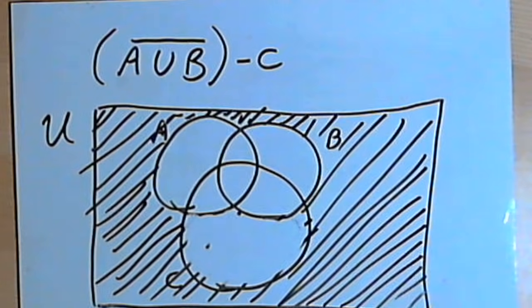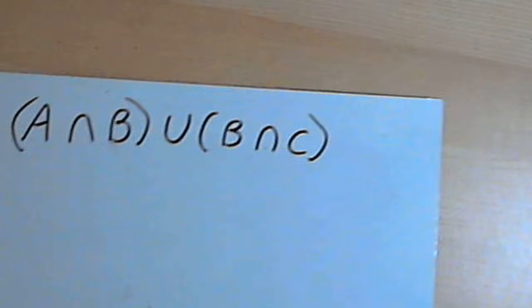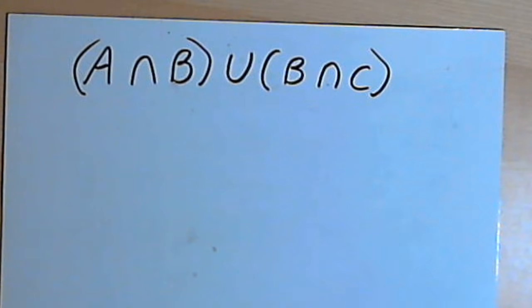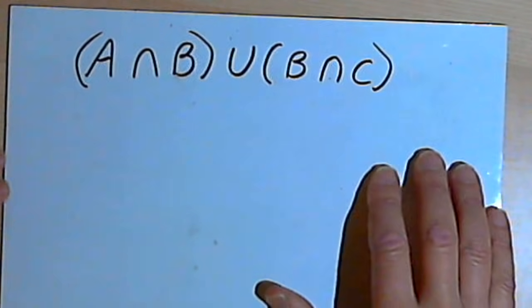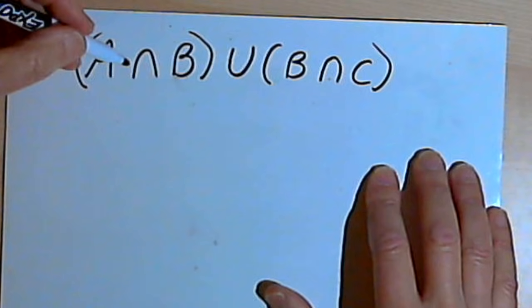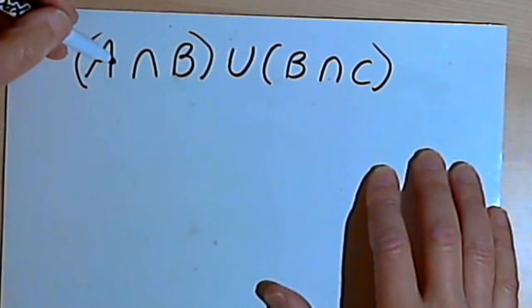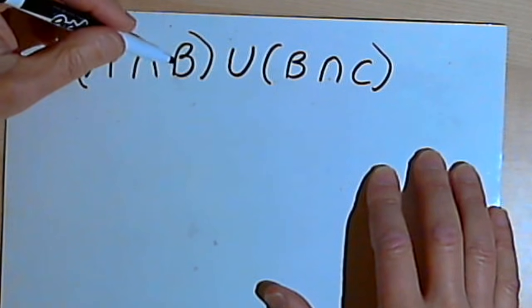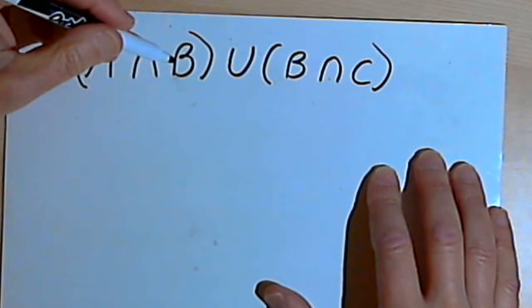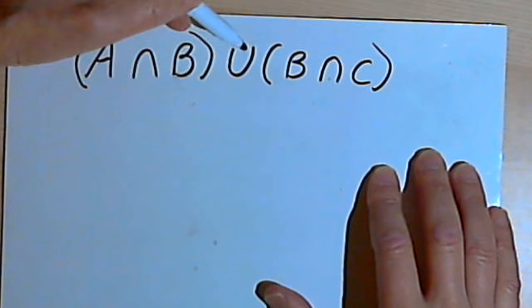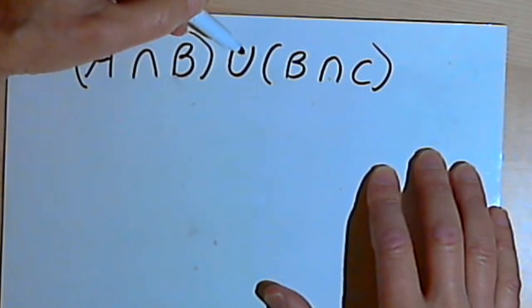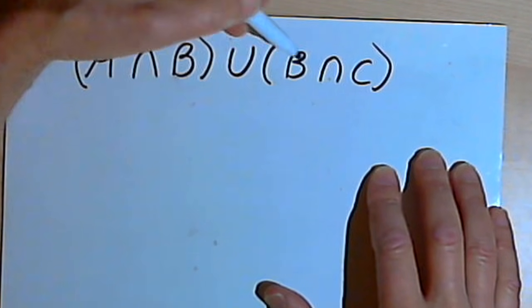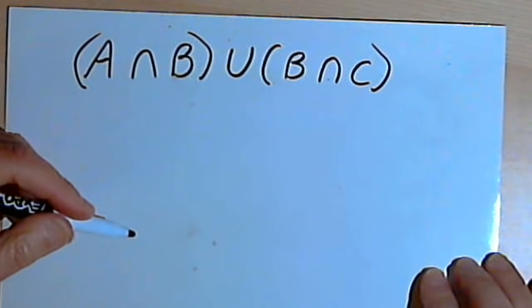Here's one more. This one has two sets of parentheses. I want the intersection of A and B, and I'm going to have the union of that with the intersection of B and C.